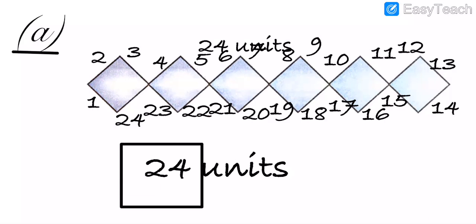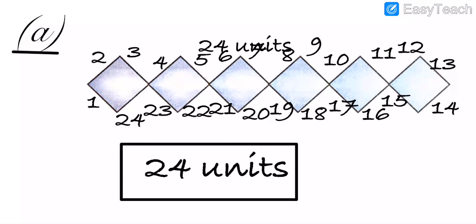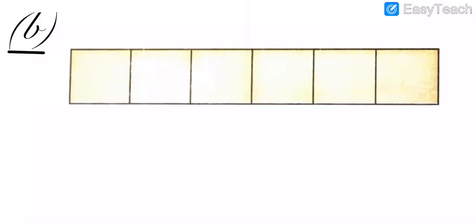If you haven't written this whole answer in your book, do it now — compulsory. You have to mention this answer. Now we will move on to question number B. First, try to draw this shape in your book with the help of a scale or pencil.